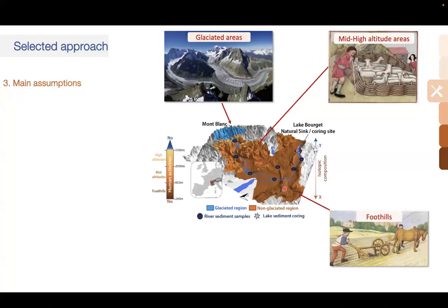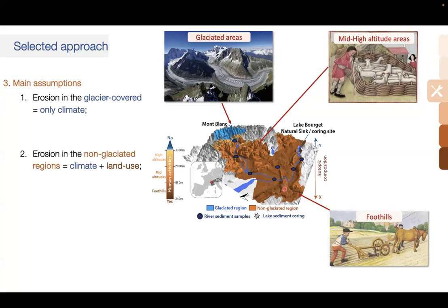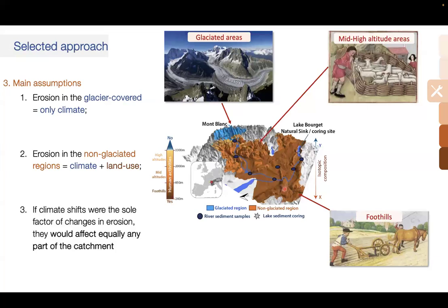We had to make three main assumptions. First, erosion in the glacier-covered region is only linked to climate — precipitation and glacier advances and retreats. Second, in the non-glaciated region, both climate and land use have affected erosion rates through time. Third — and this is a bit tricky — if climate shifts were the sole factor of changes in erosion, they would affect equally any part of the catchment.